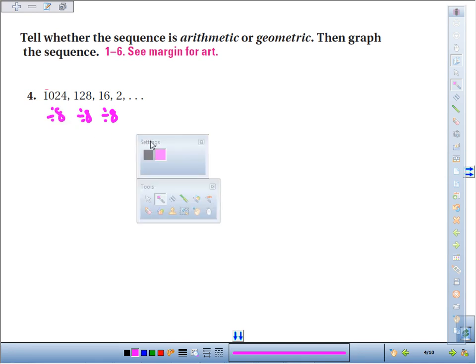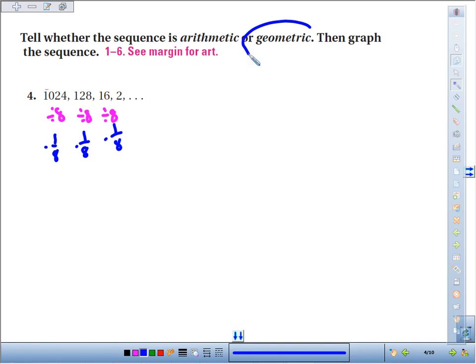Now division is just glorified multiplication. That's the same as times by 1/8, times by 1/8, times by 1/8. So since we're multiplying or dividing by the same amount every time, it's a geometric sequence.